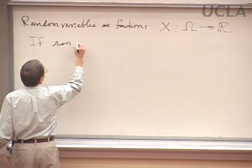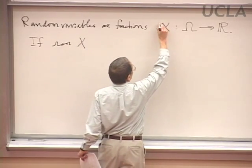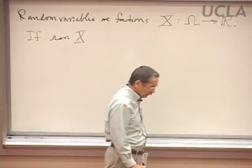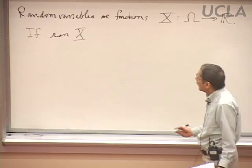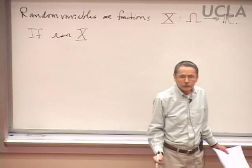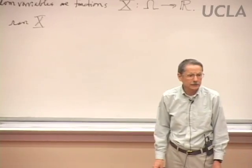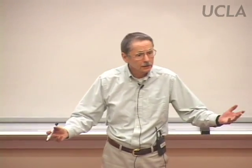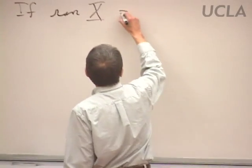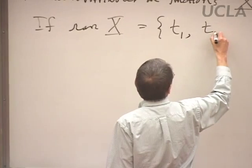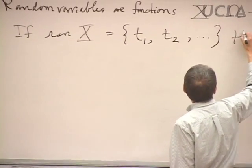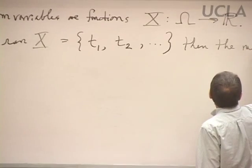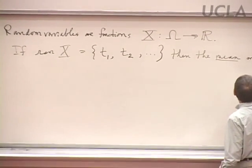If the range of this random variable — sometimes we'll write the x's in a special way so we don't mix them up with multiplication signs or lowercase x's — we talked a lot about the range of x. From calculus, the range of a function is the set of all values it takes on. For example, the range of the sine function is the closed interval from minus 1 to 1. If the range consists of exactly the numbers t1, t2, and so forth, then we define the mean of x, also known as the expected value.